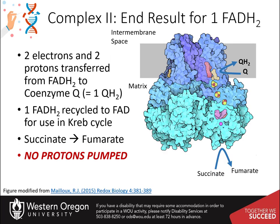Now back to complex 2. Succinate oxidation by complex 2 yields fumarate, and the liberated electrons are passed through FAD and three iron-sulfur complexes, reducing coenzyme Q to QH2. Complex 2 is a Krebs cycle enzyme providing a direct link between the Krebs cycle flux and electron transfer in the respiratory chain.